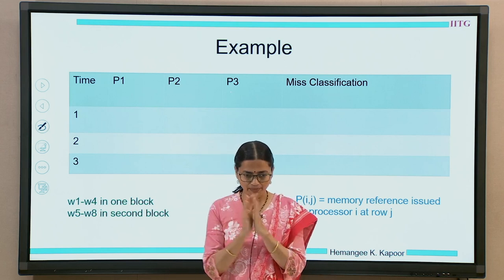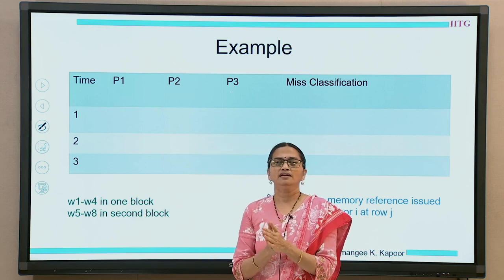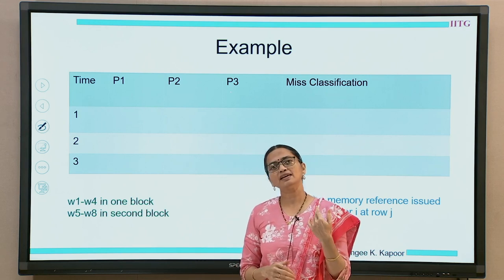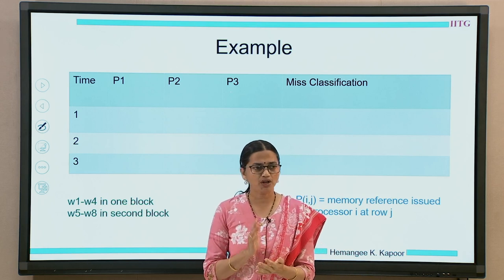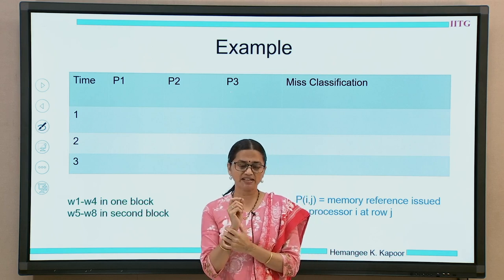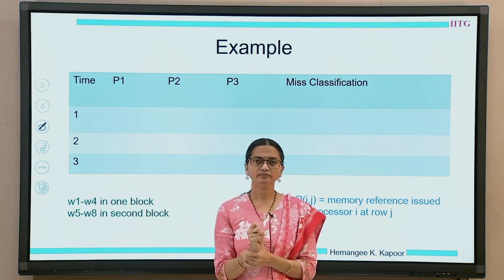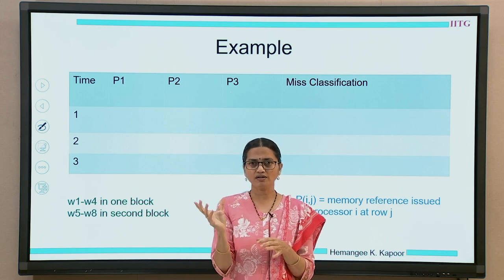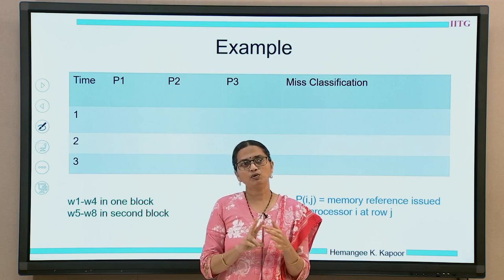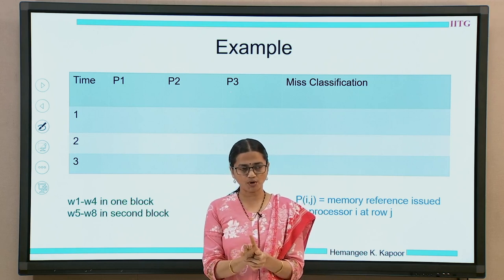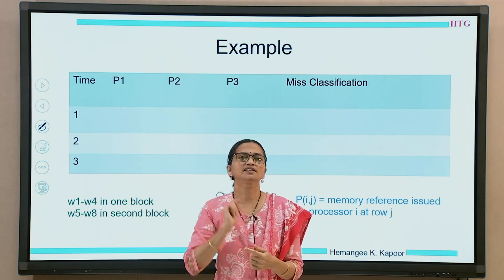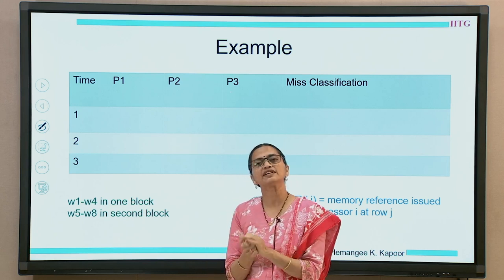There is a table on the slide and we are going to fill it slowly. We are going to list the time sequence — the sequence in which the events are happening — and then what happens in every processor. We have three processors P1, P2, and P3, and in the last column we are going to fill the miss classification name. We are only going to discuss one block B, which has four words W1 to W4. Words 5 to 8 will also sit in the same location so that we can generate the conflict scenario.